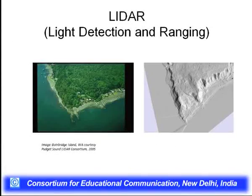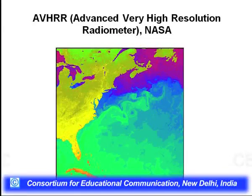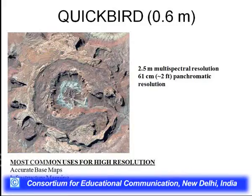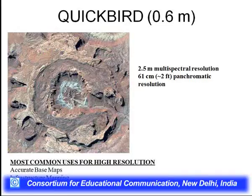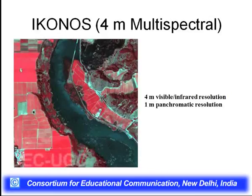AVHRR data from NASA is widely used. QuickBird is a very high-resolution satellite giving multispectral resolution of 2.5 meters and panchromatic resolution of 61 cm. It can be used for accurate base mapping, infrastructure mapping, disaster assessment, and very detailed micro-level studies. IKONOS provides 4-meter multispectral and 1-meter panchromatic resolution.